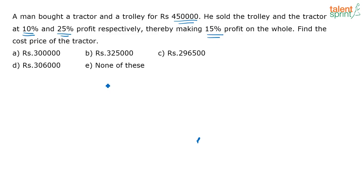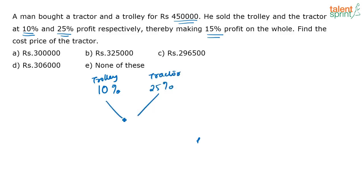He is selling the trolley at a profit of 10% and the tractor at a profit of 25%. On doing this, his net profit is becoming 15%. Using the concept of allegation, the ratio of the prices of these two articles is: 15 minus 25 = 10, and 15 minus 10 = 5.